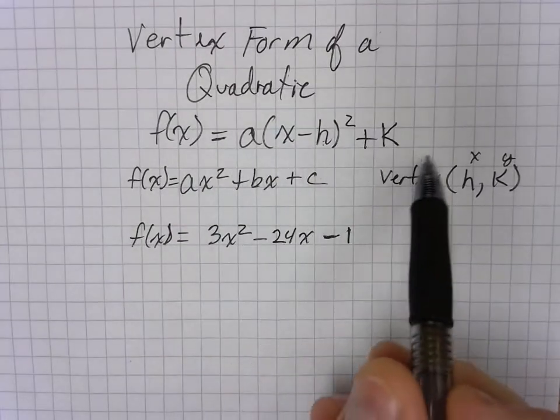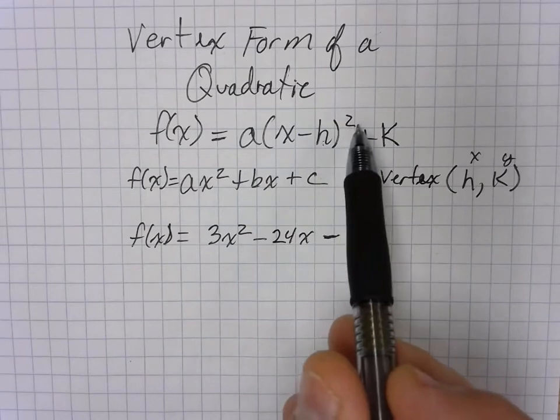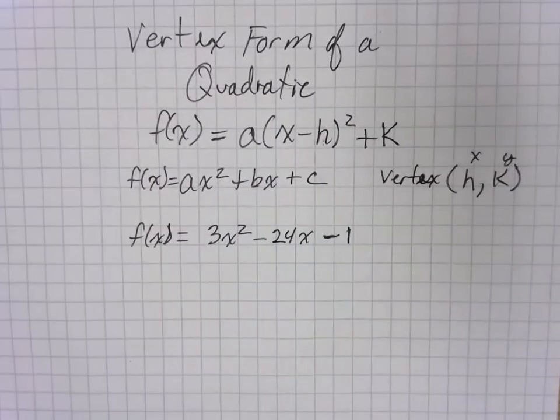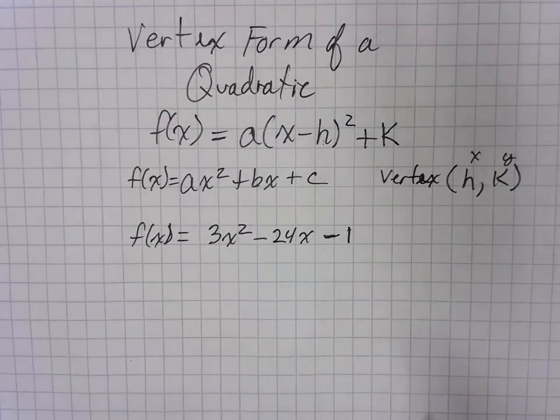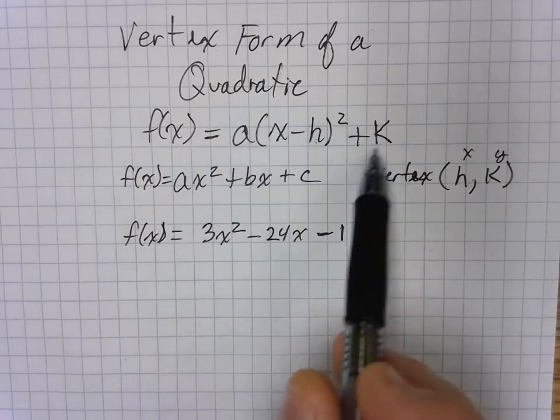A vertex form is this form right here, a times in parentheses x minus h squared plus k. Sometimes this is referred to as hk form. And we're going to go from standard form and rewrite it in this form.